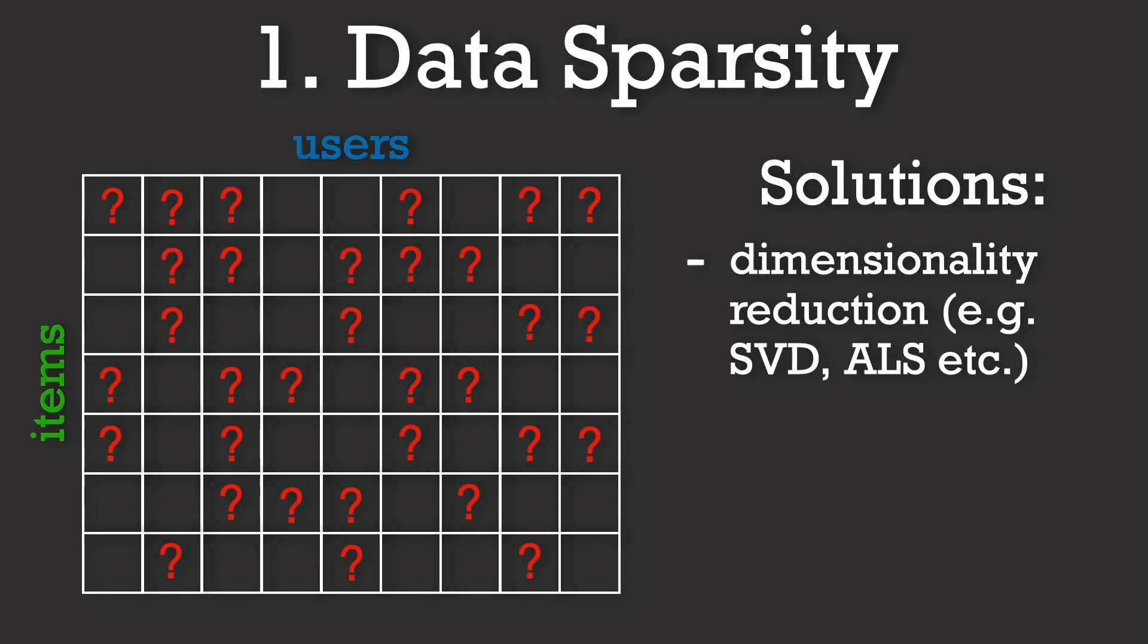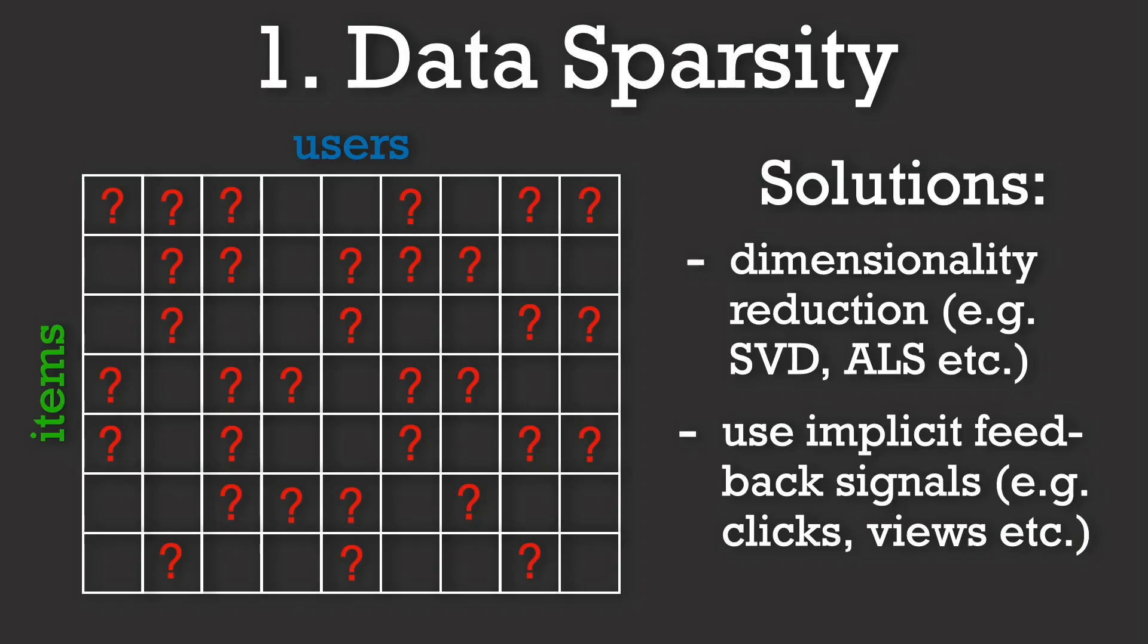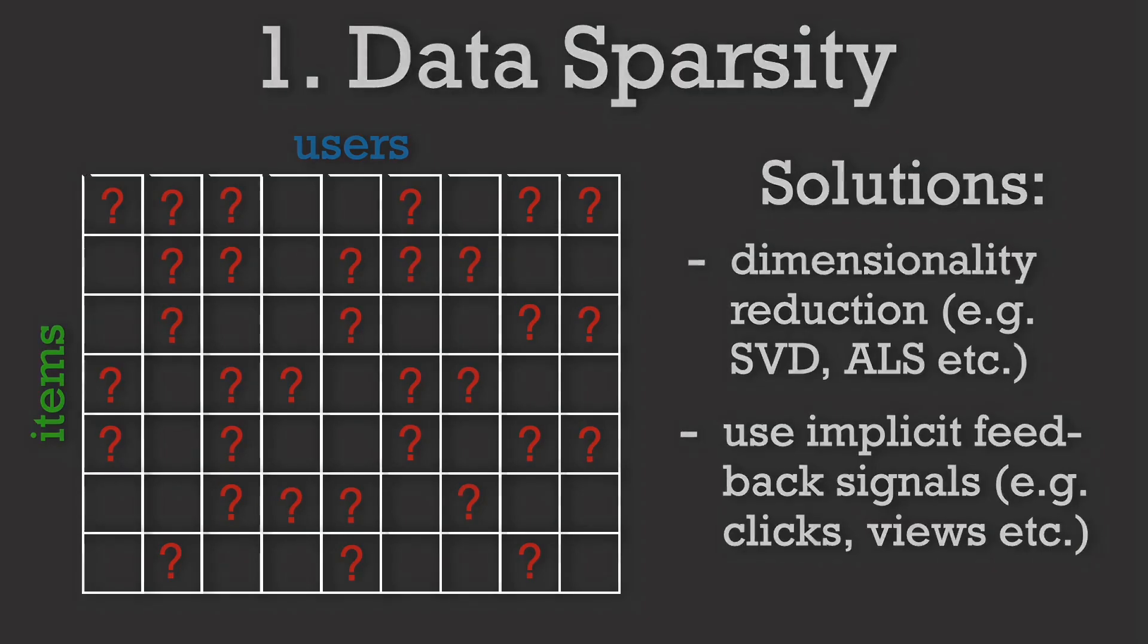Another strategy is to use implicit feedback signals that are more dense, such as clicks, views, or purchase histories, which are usually far more abundant than explicit ratings.